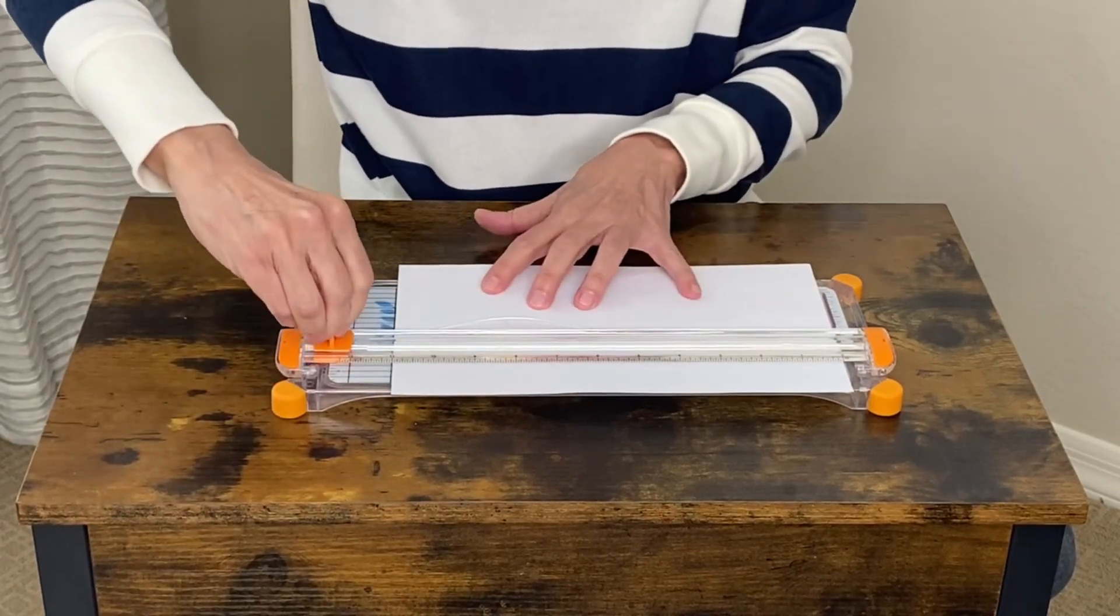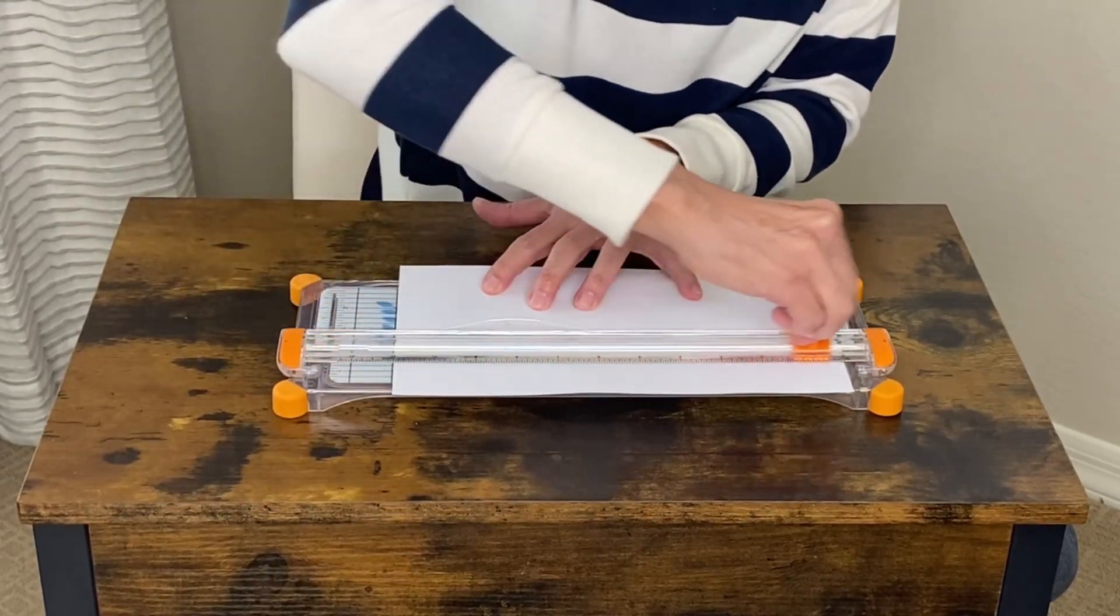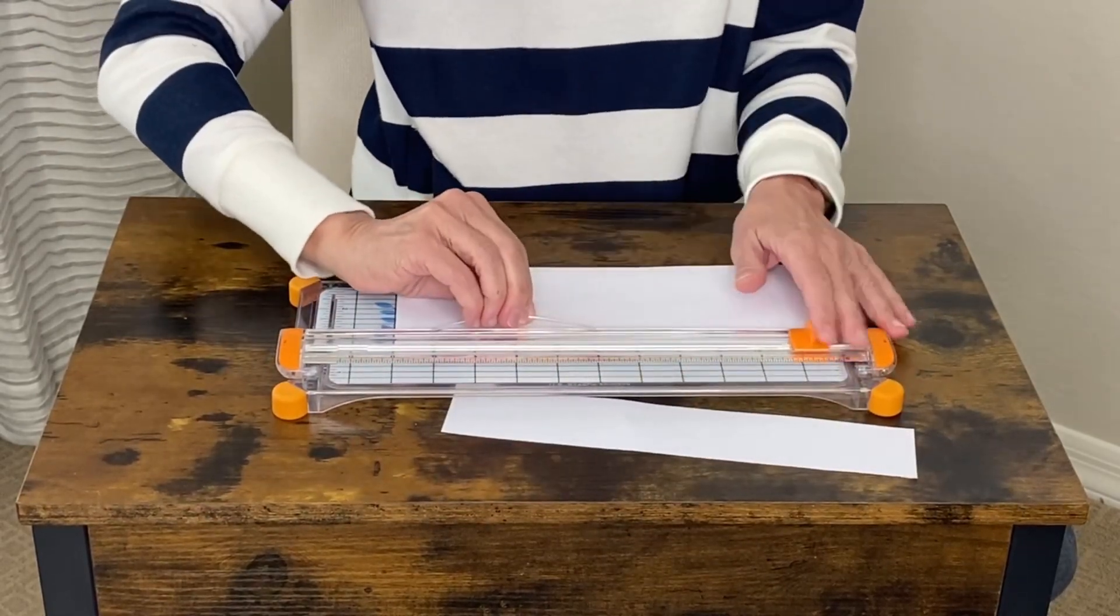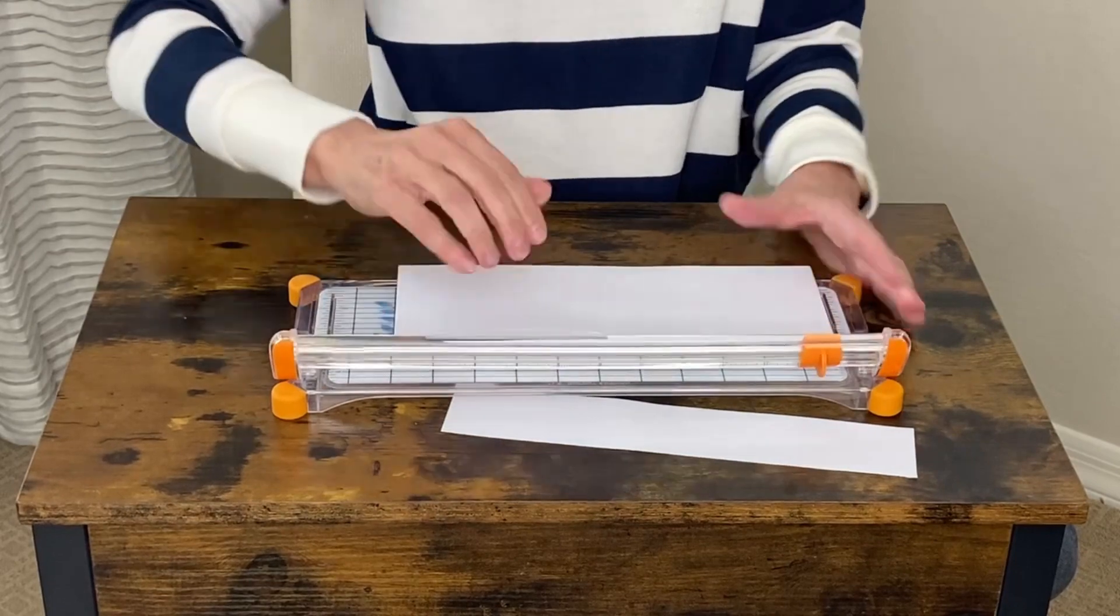All you do is use the slider and slide it across your paper. This piece tears off, and then you have the perfect size cut.